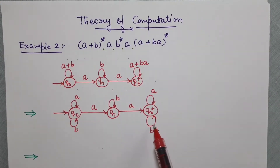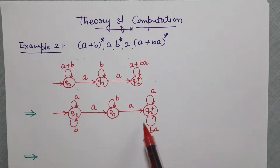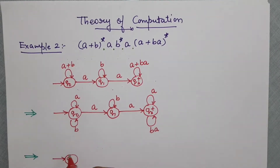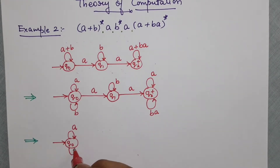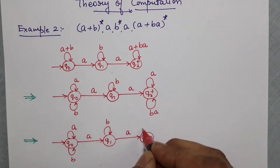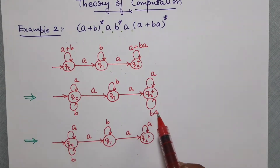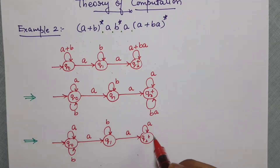Now can I say that this is complete? Still no. Why? Because of this 'ba' — it is indicating that it is a transition graph, and we need to have an automata. So till now it remains the same, but the change will be in this 'ba'.